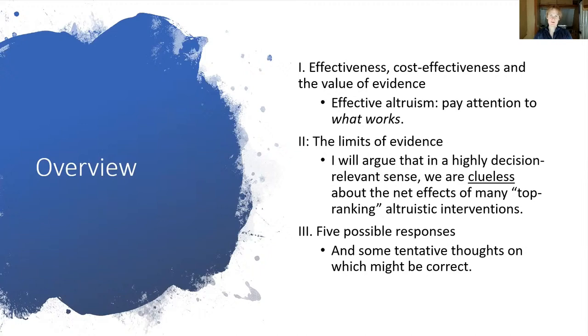Cluelessness and effective altruism. My talk has three parts. In part one, I'll talk about three of the basic canons of effective altruism, as I think most people understand them: effectiveness, cost effectiveness, and the value of evidence.